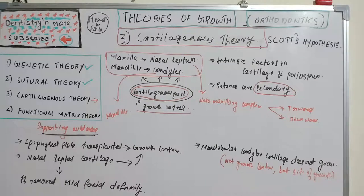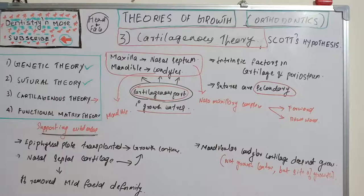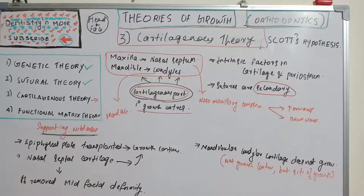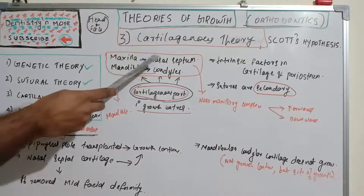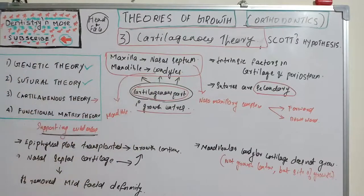Every theory has one key point: genetic theory emphasizes genetics, sutural theory emphasizes sutures, and cartilaginous theory emphasizes cartilage. The two key cartilages in the head and face are the nasal septal cartilage in the maxilla and the condylar cartilage in the mandible.